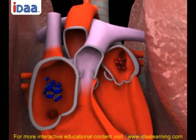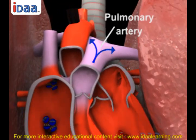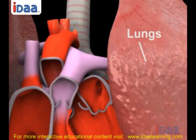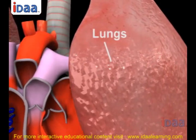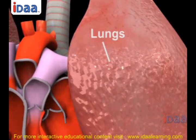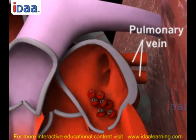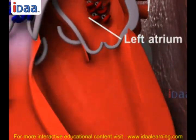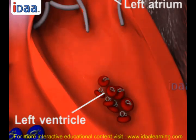The blood goes to the lungs via pulmonary artery for purification. In the lungs, there is exchange of gases and oxygen rich blood from here travels to the heart again from the pulmonary vein. The oxygen rich blood reaches the left atrium and left ventricle.